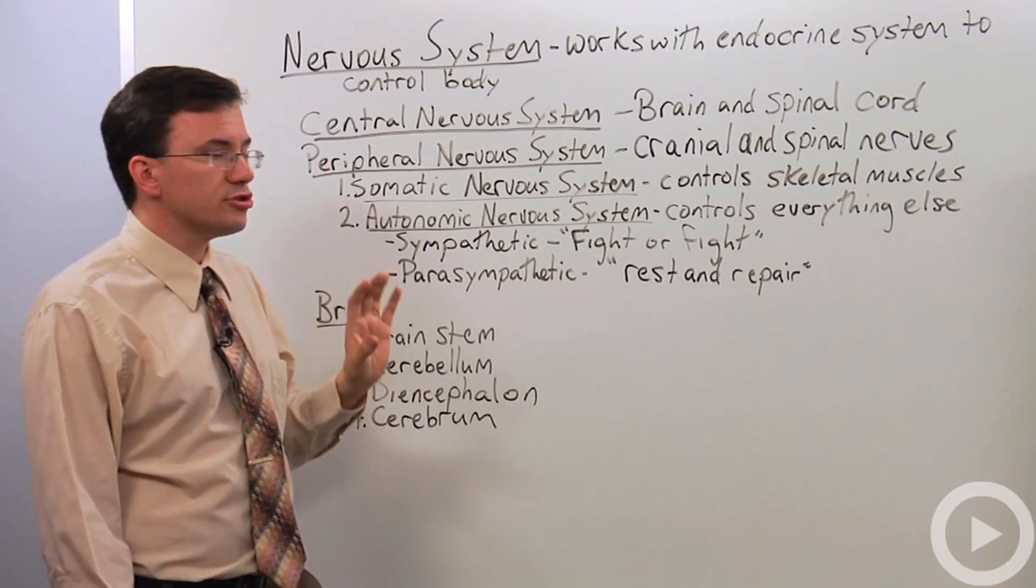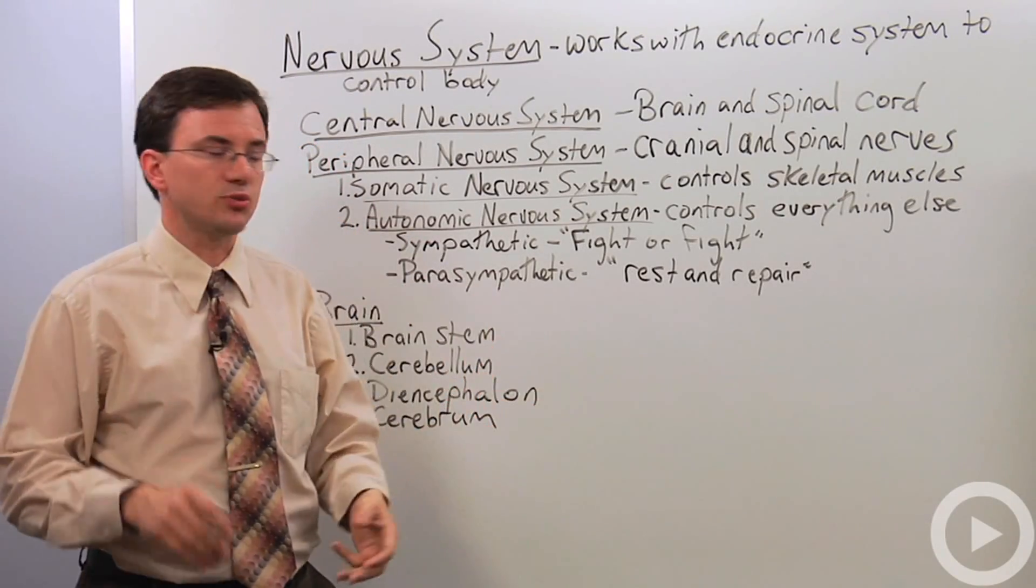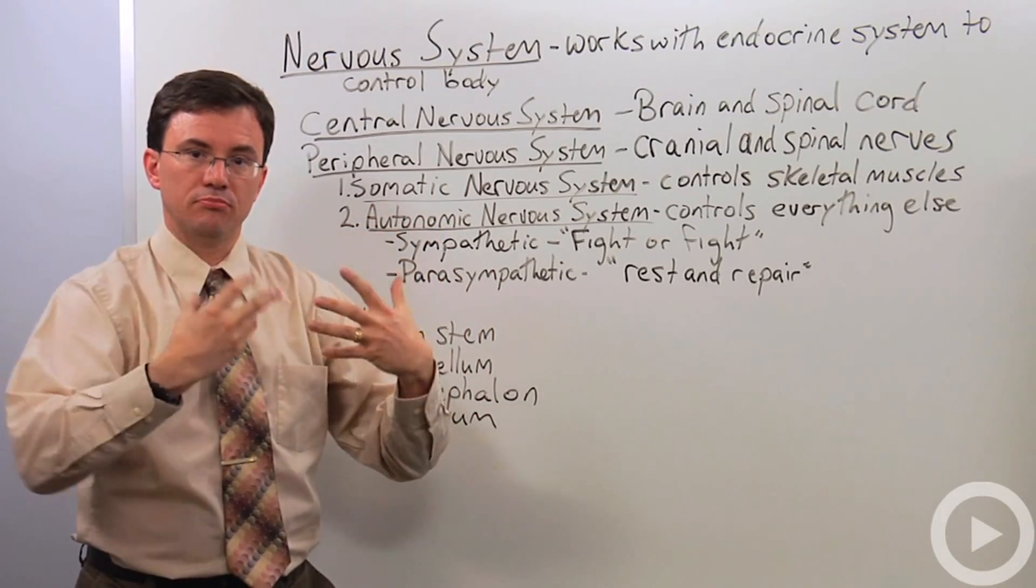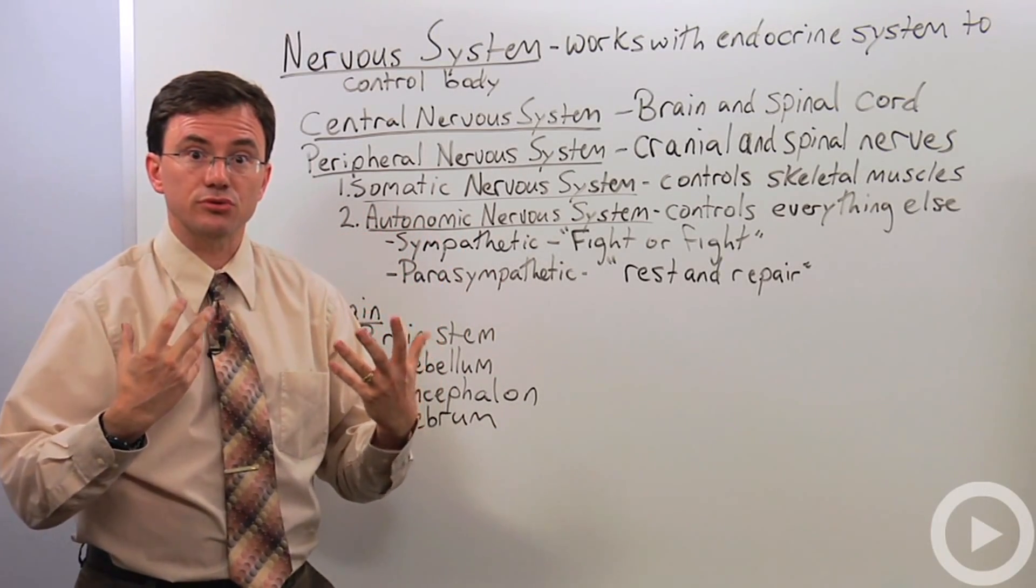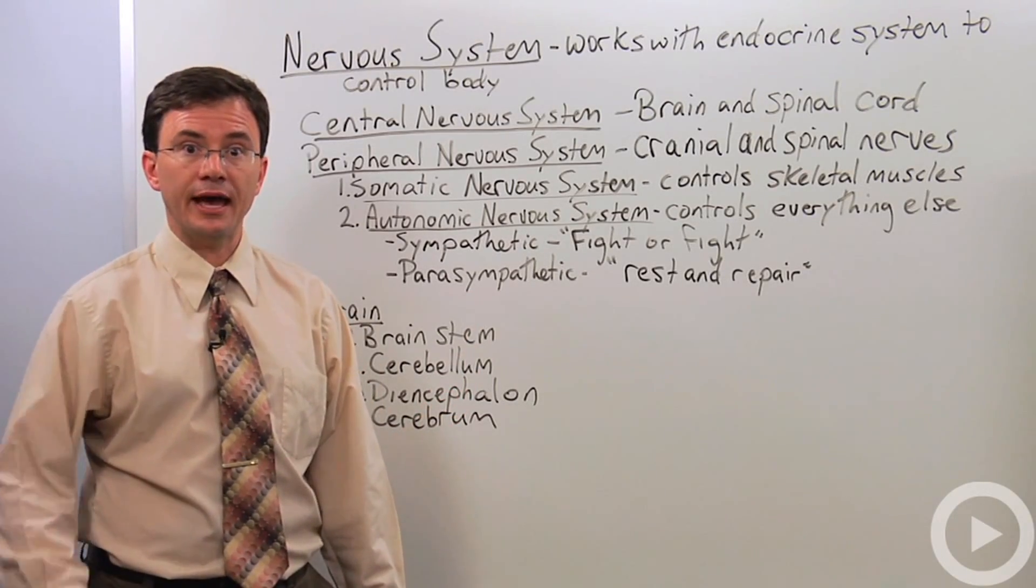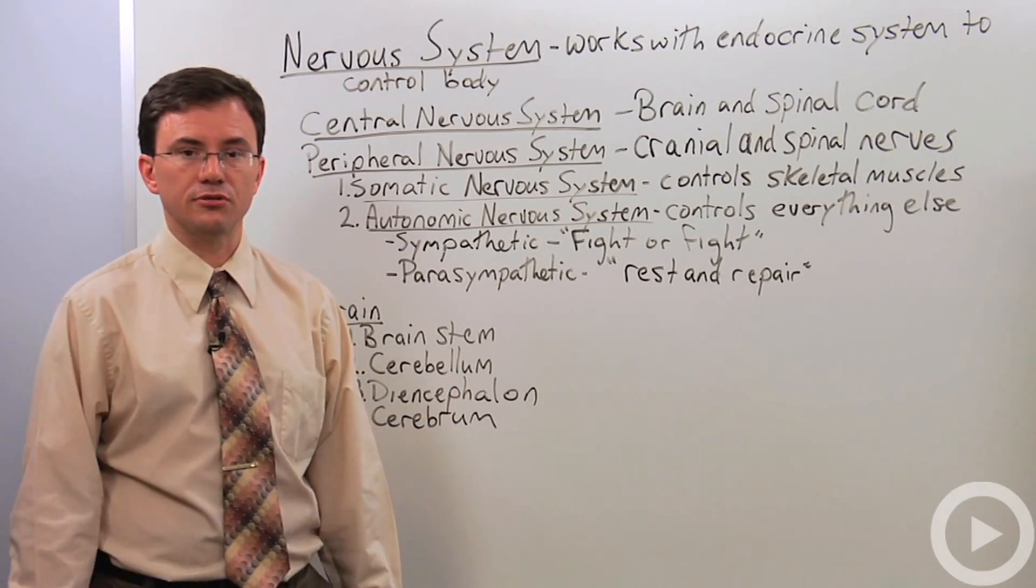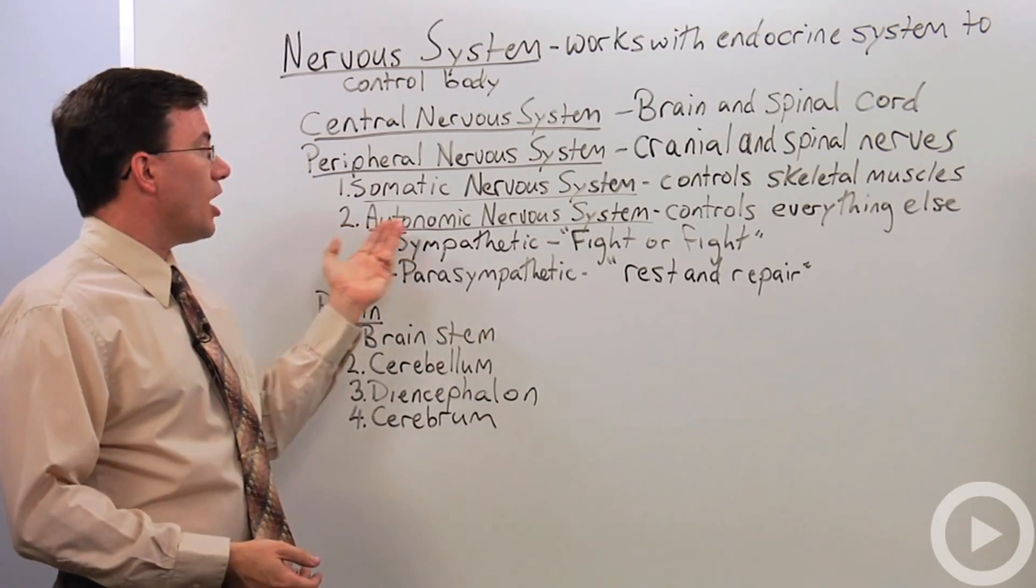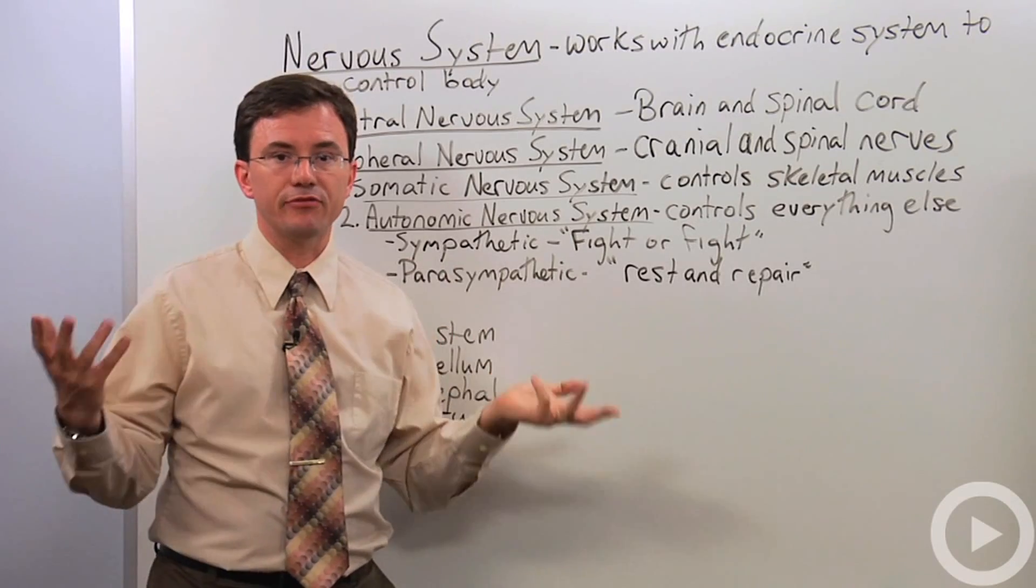Now within the peripheral nervous system, they'll make the distinction between the somatic nervous system, which is the part of your nervous system that controls your skeletal muscles. In other words, it's my somatic nervous system that I activate in order to do this or that. Why? I don't know.